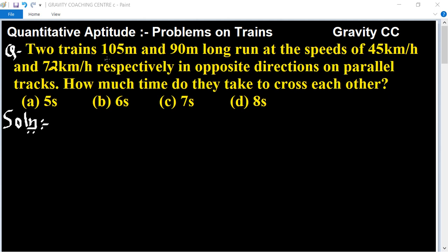So this question is two trains which are given length and speed, both in opposite direction on parallel tracks. How much time do they take to cross each other? So we will find the formula.